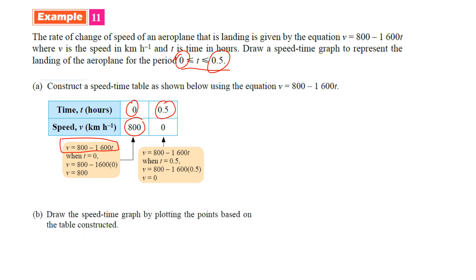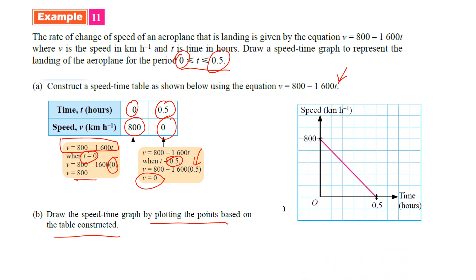When t is 0, substitute zero into the equation and you get v = 100. When t is 0.5, substitute 0.5 into the equation and you get v = 0. Next, draw the speed-time graph by plotting these two points. Remember to write the speed with its unit on the y-axis and the time with its unit on the x-axis. Place 100 on the speed axis and 0.5 on the time axis, plot the points, and draw the graph.